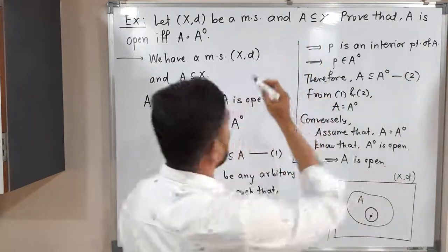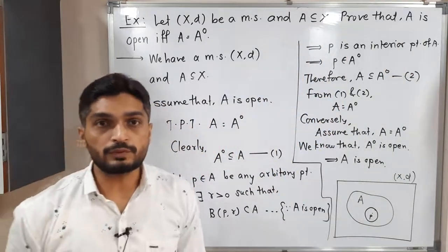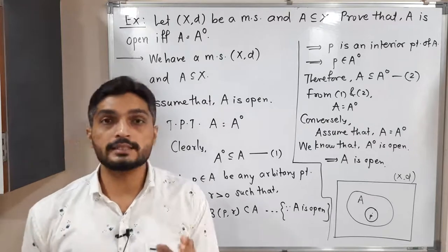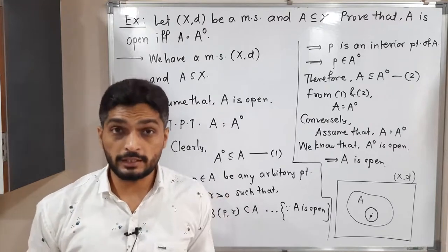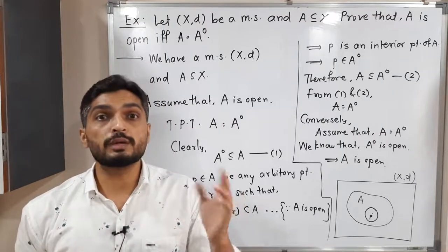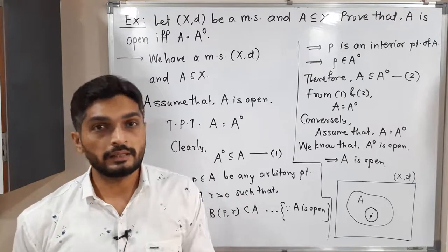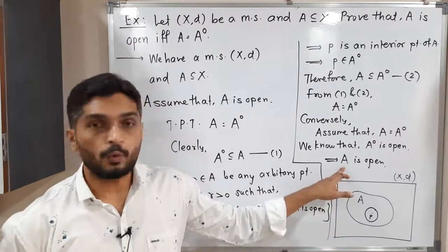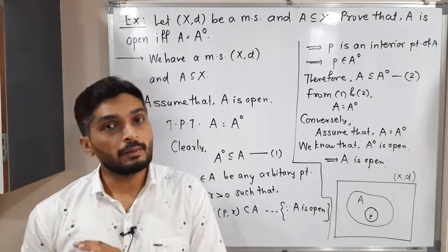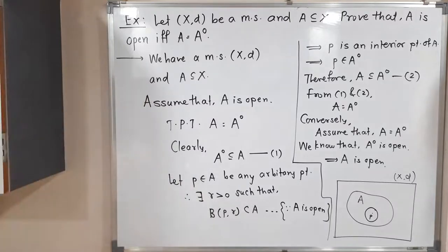So we proved A is open. We proved in both ways: first we assumed A is an open set and proved A is equal to A interior; and conversely we assumed A is equal to A interior and proved A is an open set. So in this way we proved both directions, and the proof is complete.